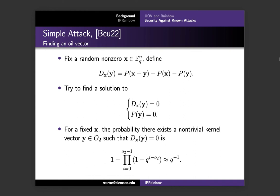The attack goes as follows. First, we're going to fix a random x in Fq to the n, and then we're going to define the linear function d sub x of y, which is equal to the discrete differential of p with a fixed value of x. And then we know that for any non-zero x and for any y in O2, d of x of y is going to be in that space W. So this leads to the strategy of guessing a random vector x and trying to find the solution to the system of equations d sub x of y equals zero and p of y equals zero. If we can find such a y, then it's likely that y is in O2. If we cannot find such a y, you're just going to choose a different x and repeat the process.